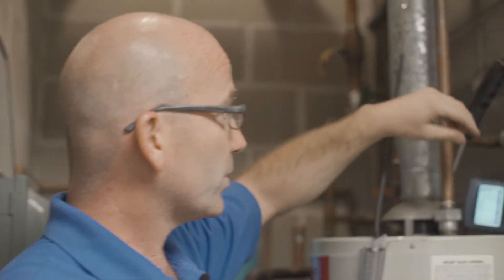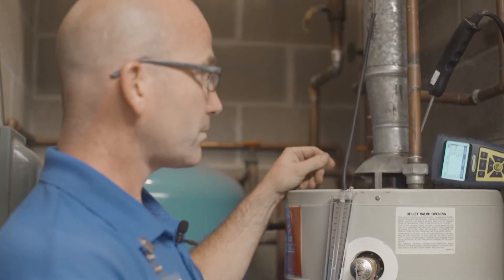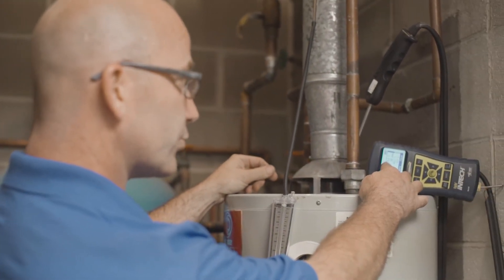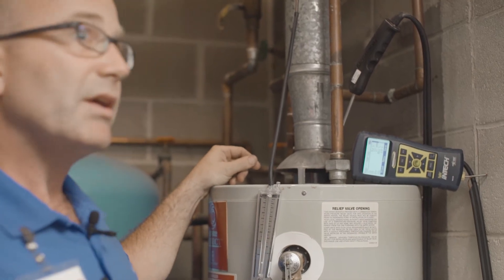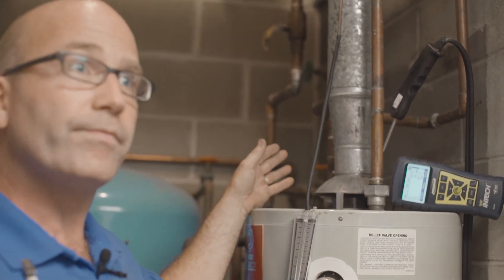They can be dangerous, meaning the reason we use the combustion analyzer at the same time as the draft gauge. Carbon monoxide right here is at 26 parts per million. If that were sitting at 400 and this was also not drafting properly, that 400 parts per million would be spilling out of this draft diverter into the home and that could have a very serious effect on the homeowner, meaning in a negative way.